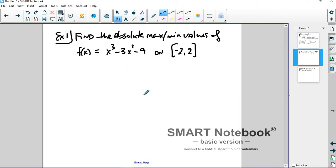So we want to find the absolute max and min values of the function f(x) equal to x³ - 3x² - 9x. That should have an x there. And so we want to find the absolute max and min values of that.